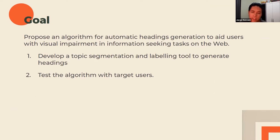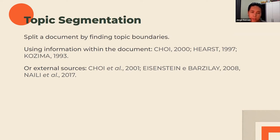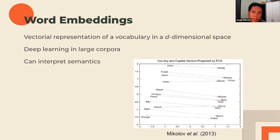Our focus was on large texts. We had two stages: first, developing the topic segmentation and labeling tool to generate the headings; second, testing the algorithm. Topic segmentation is the task of splitting a document by finding the places where the topic changes — the topic boundaries. We can do that using information from within the document, like comparing words, or using external sources like language models, which is our case — specifically word embeddings.